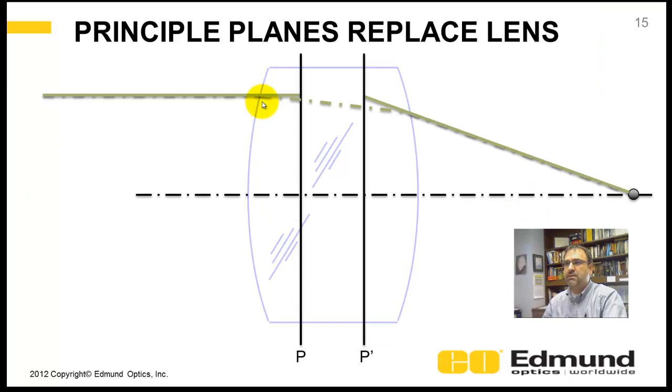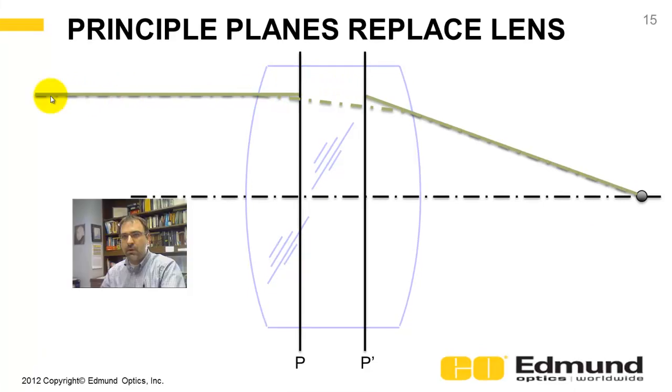Now, these principal planes, you can replace the lens. I've grayed out this blue thick lens here, and you just consider the principal plane. You have a ray that comes in, incoming marginal ray, hits the front principal plane, and then at the back principal plane, it refracts and comes to a focus.